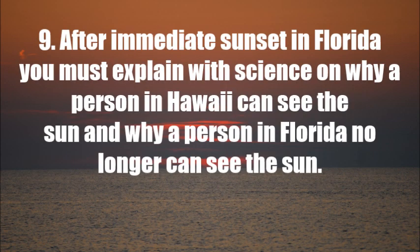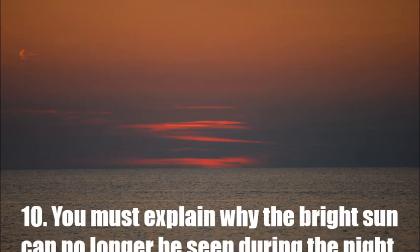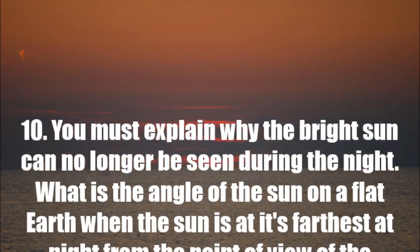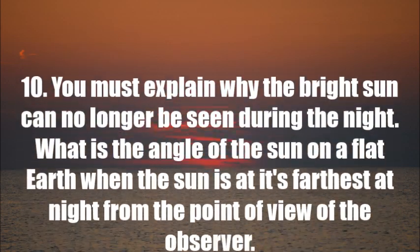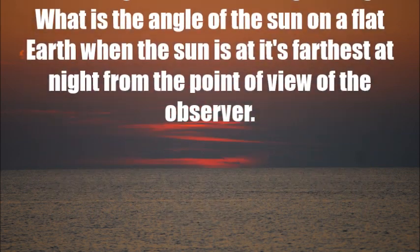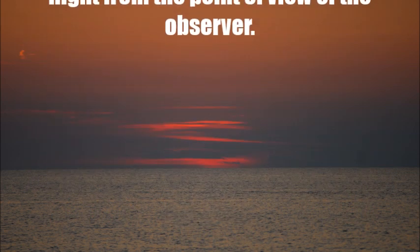Number nine: after immediate sunset in Florida, you must explain with science why a person in Hawaii can still see the Sun and why a person in Florida can no longer see it. Number ten: you must explain why the bright Sun can no longer be seen during the night — what is the angle of the Sun on a flat earth when the Sun is at its farthest point at night from the point of view of the observer?